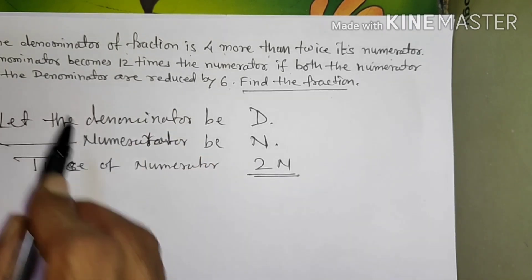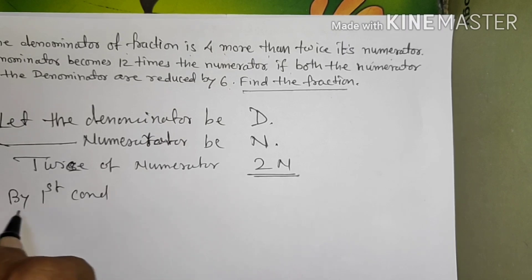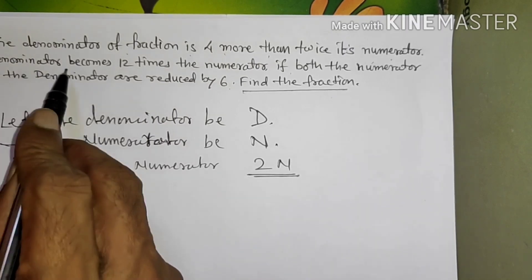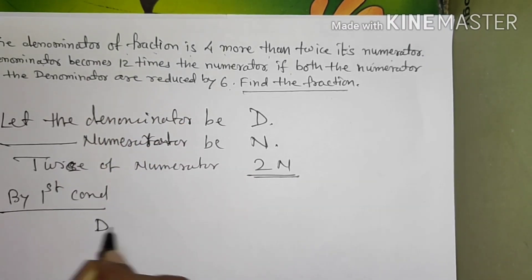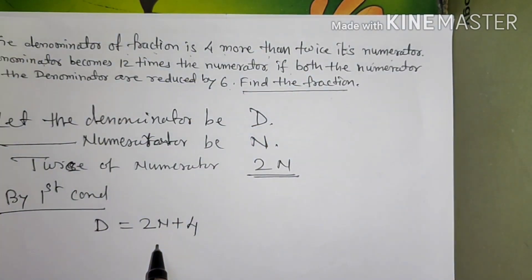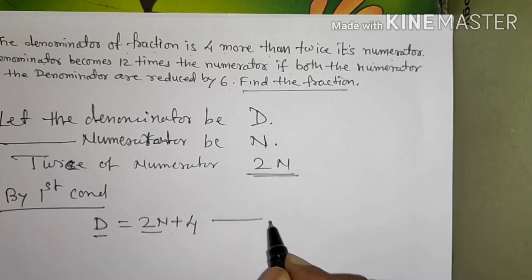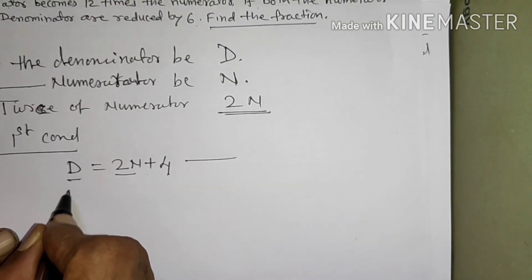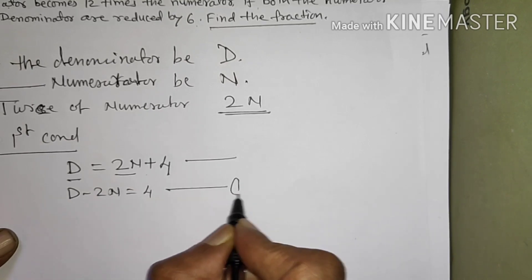The denominator of the fraction by the first condition — denominator D is equal to 4 more than twice its numerator, that is 2N plus 4. So D equals 2N plus 4. This is the equation. Then we get: D minus 2N is equal to 4. This is equation number 1.